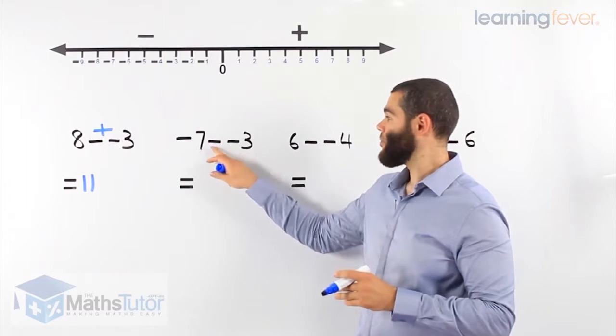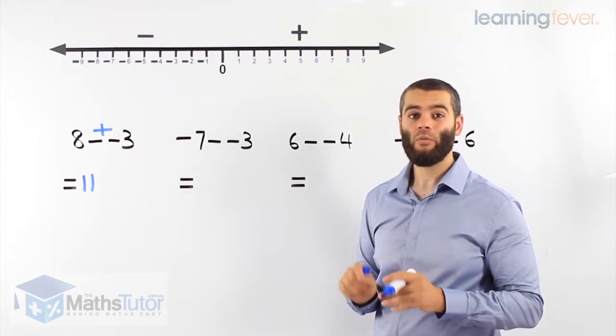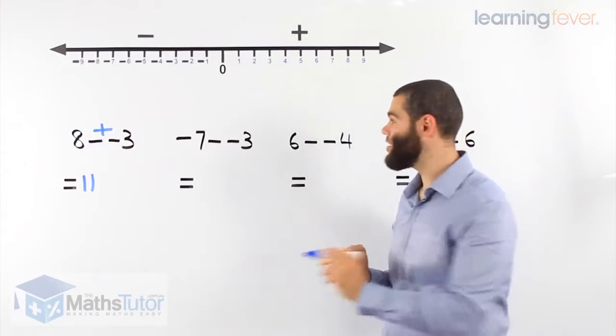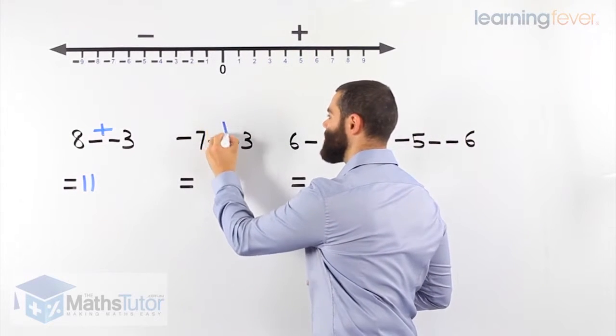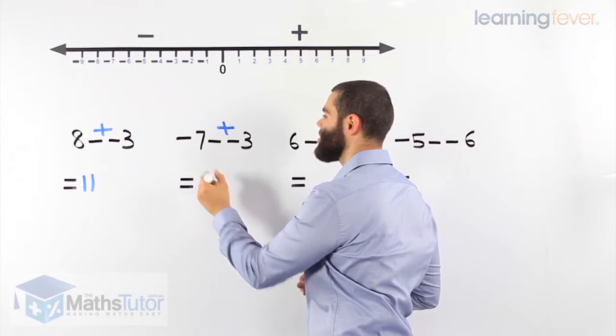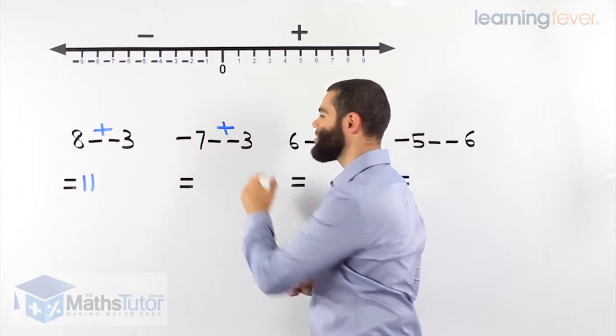Negative 7 minus negative 3. Again, we have two negatives side by side, right next to each other. They join forces and become a plus: negative 7 plus 3.